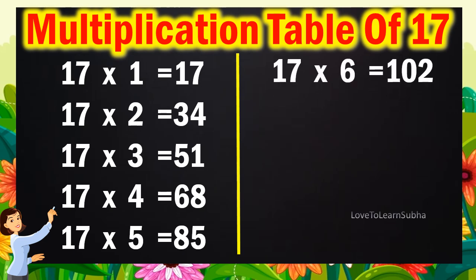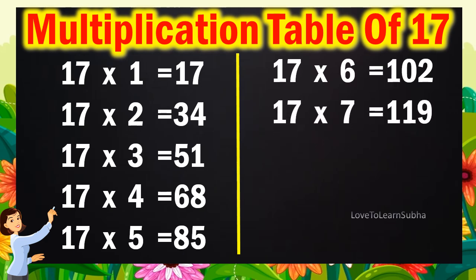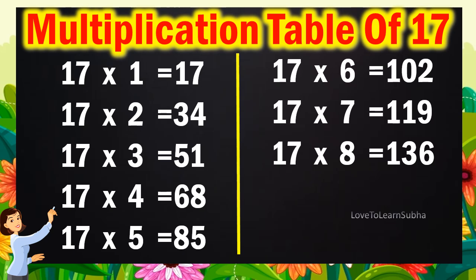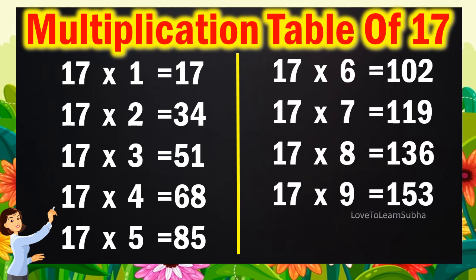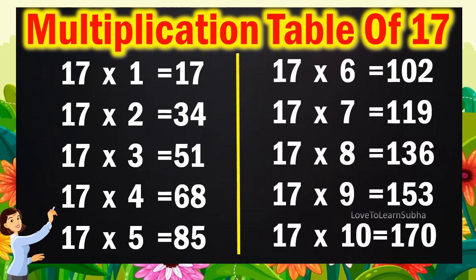17 6s are 102, 17 7s are 119, 17 8s are 136, 17 9s are 153, 17 10s are 170.